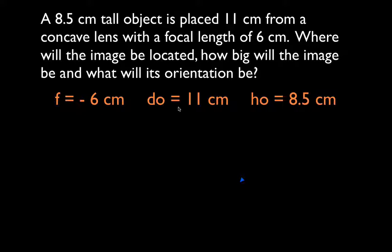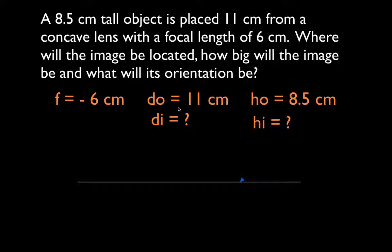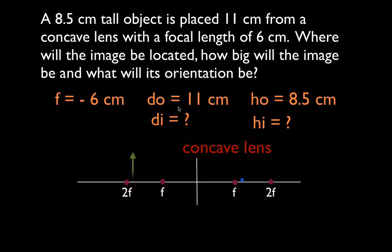The object distance is 11, and the object height is 8.5, and of course we want to get the image distance and the image height. I think before you begin, it's very good to just pick up your pen or pencil and make a quick sketch on your page. I put F and 2F down on both sides and write down that it's a concave lens.